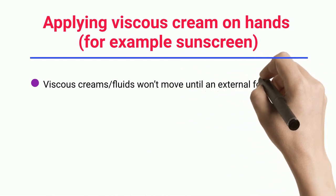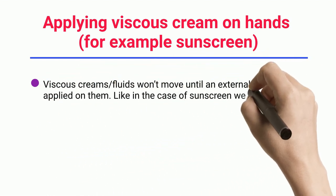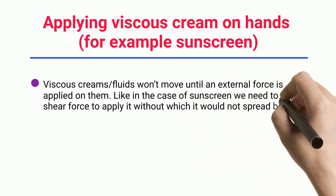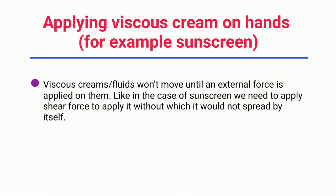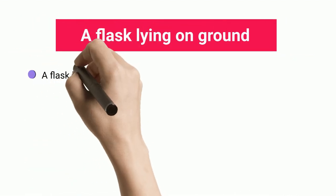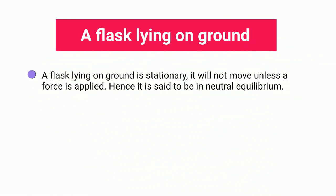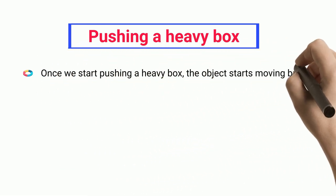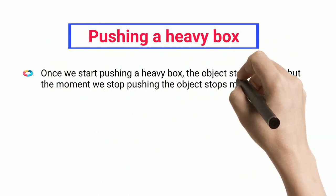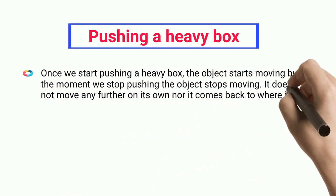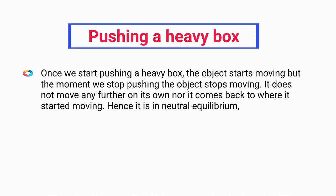Example six: applying viscous cream on hands, such as sunscreen. Viscous cream or fluids won't move until an external force is applied; we need to apply shear force to spread it. Example seven: a flask lying on the ground is stationary and will not move unless a force is applied. Example eight: pushing a heavy box — once we stop pushing, the object stops moving and does not return to where it started, hence it is in neutral equilibrium.